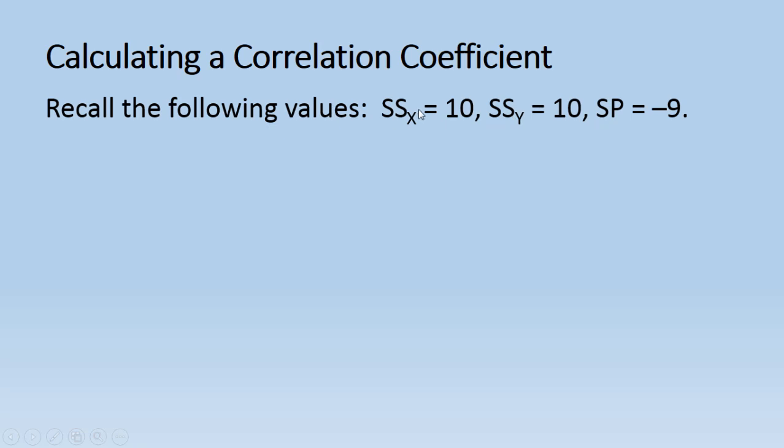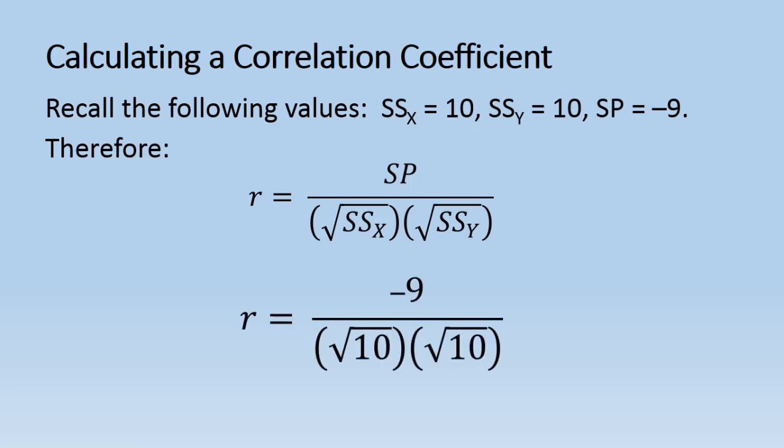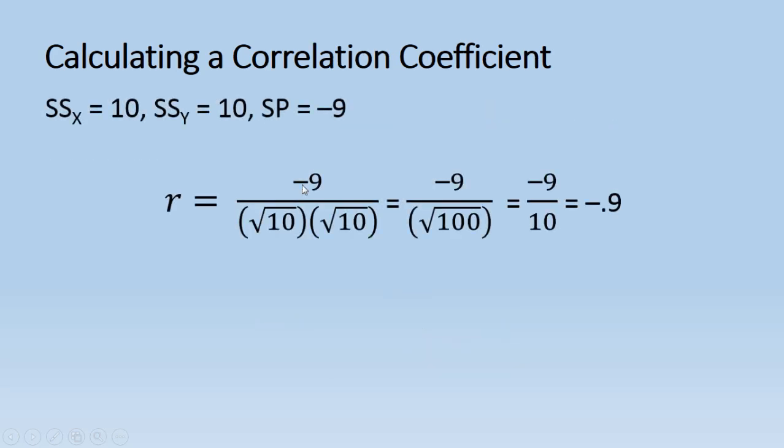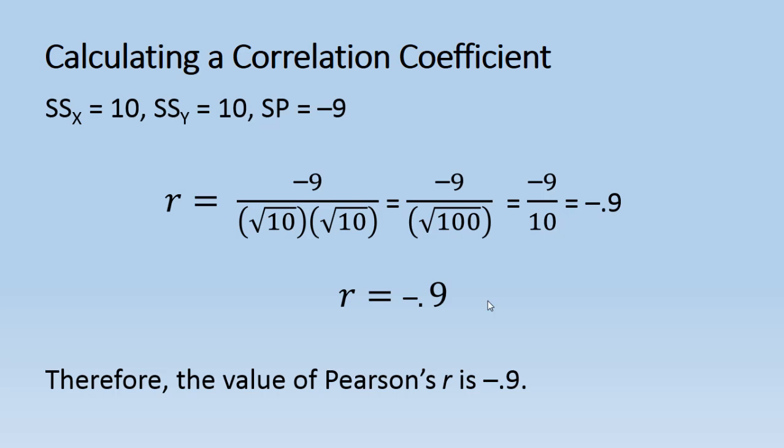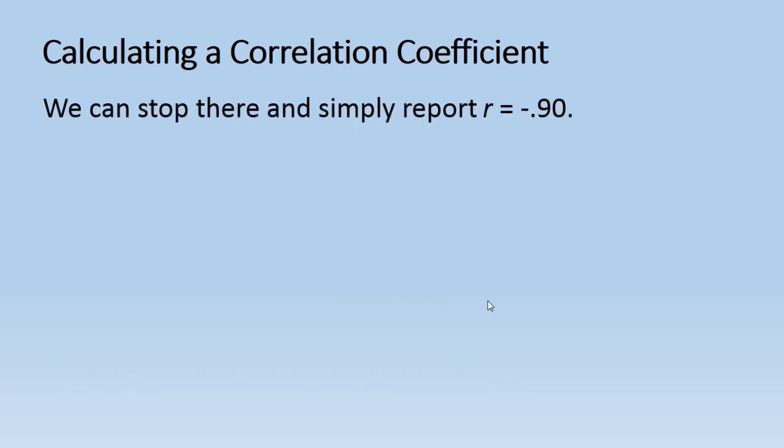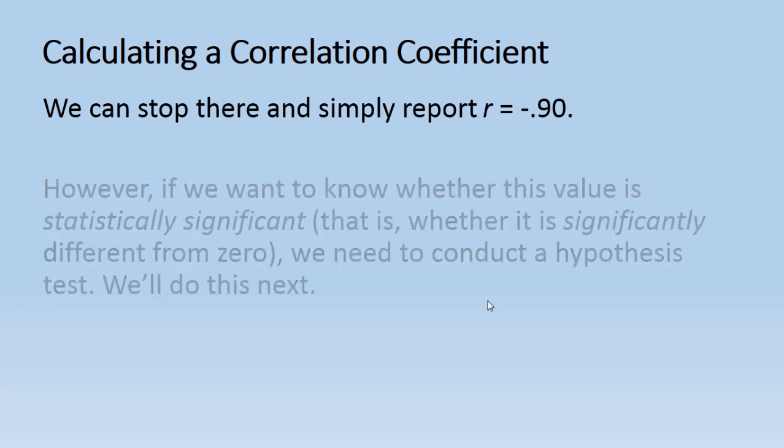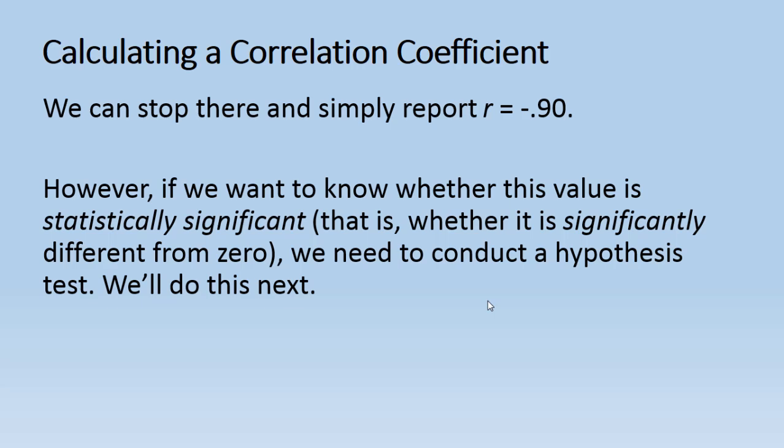Recall that SS X and Y were both 10 in this example, and the SP was negative 9. So we'll just go ahead and plug these values in. We have negative 9 over square root of 10 times square root of 10. And that gives us, when we work it out, an r of negative 0.9. So once again, our value of Pearson's r is negative 0.9. We can stop right here and just report that our r was negative 0.9, and we can be done. However, if we want to know whether this value is statistically significant, that is, whether it's significantly different from zero, then we need to conduct a hypothesis test.